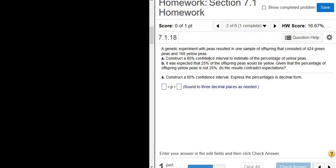Part A, construct a 95% confidence interval to estimate the percentage of yellow peas. What this means is it wants us to give a range of values for the percentage of all yellow peas. That's what a confidence interval is, just a range of values.